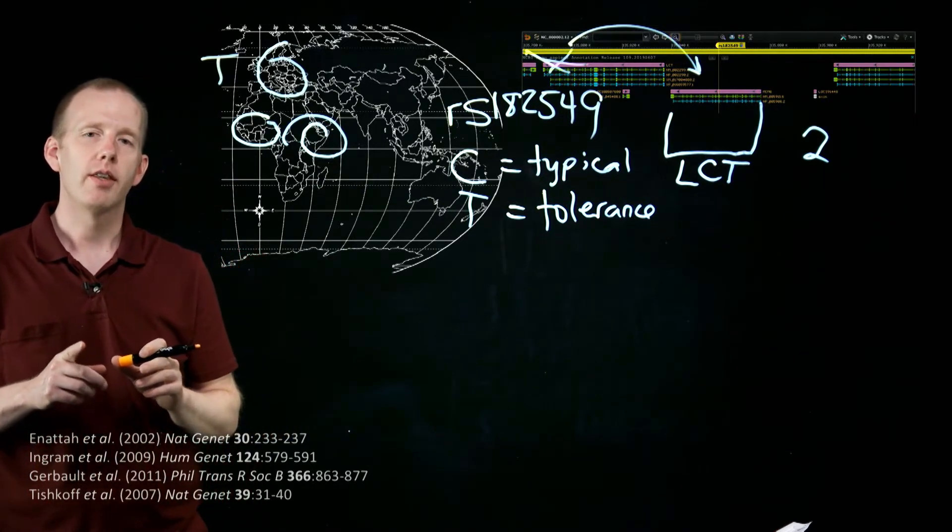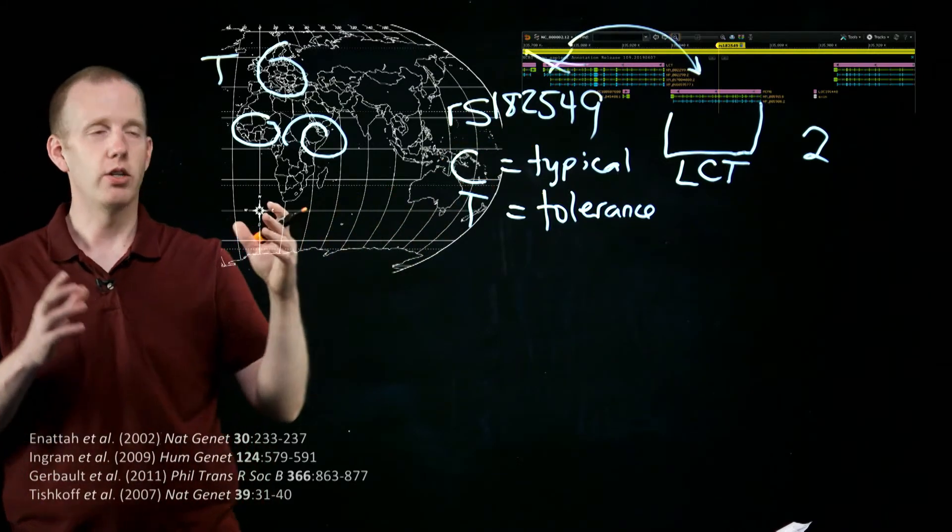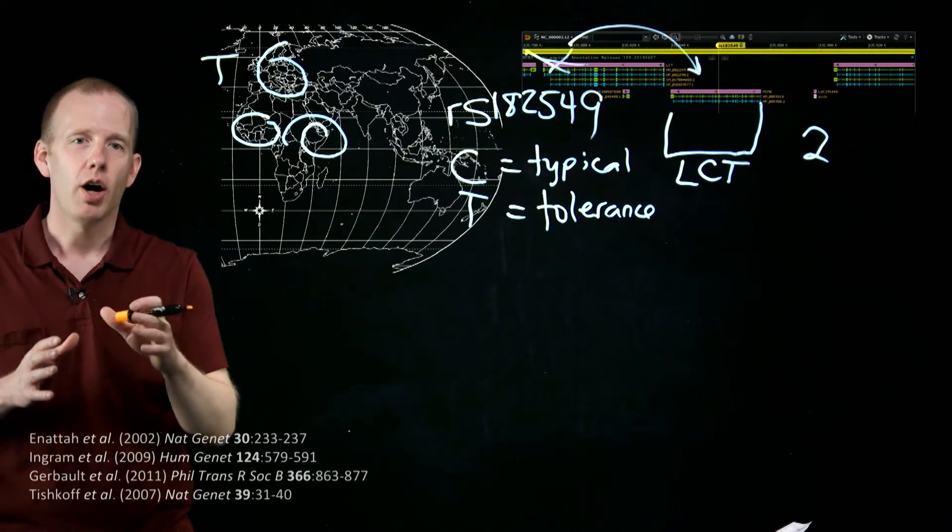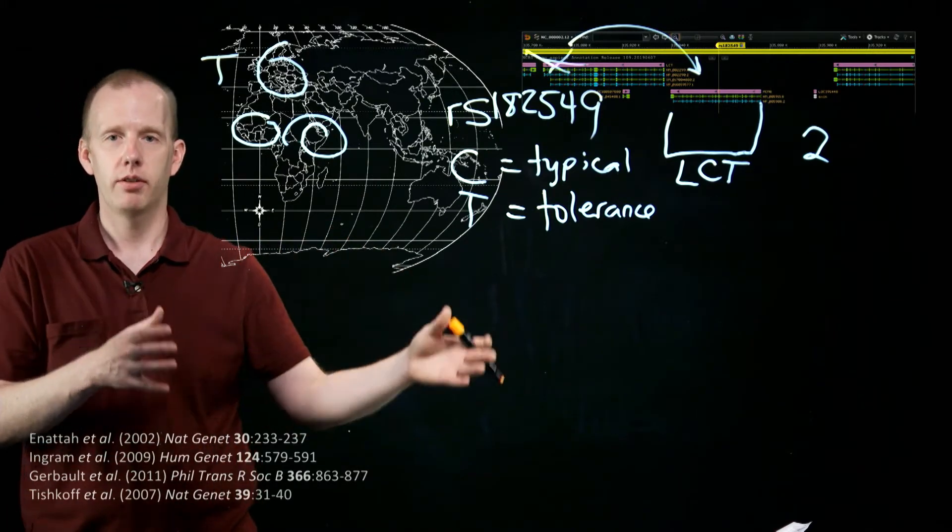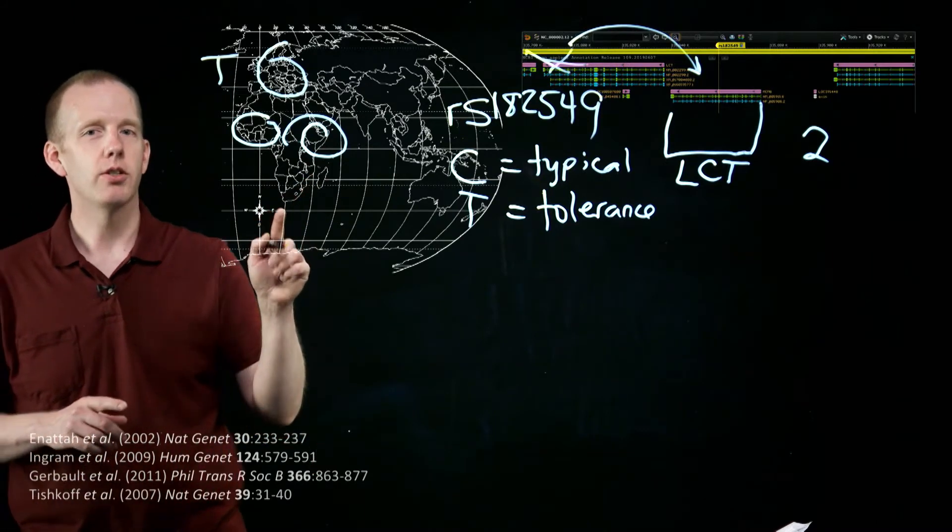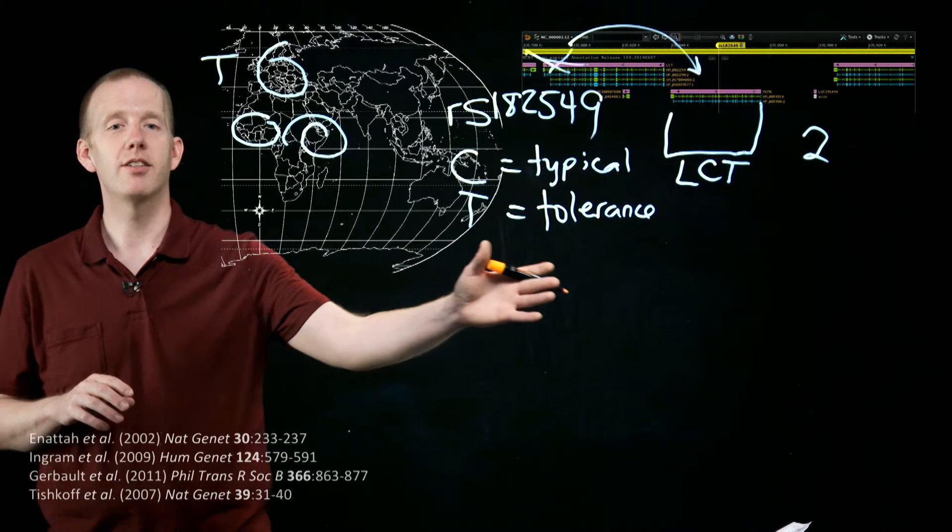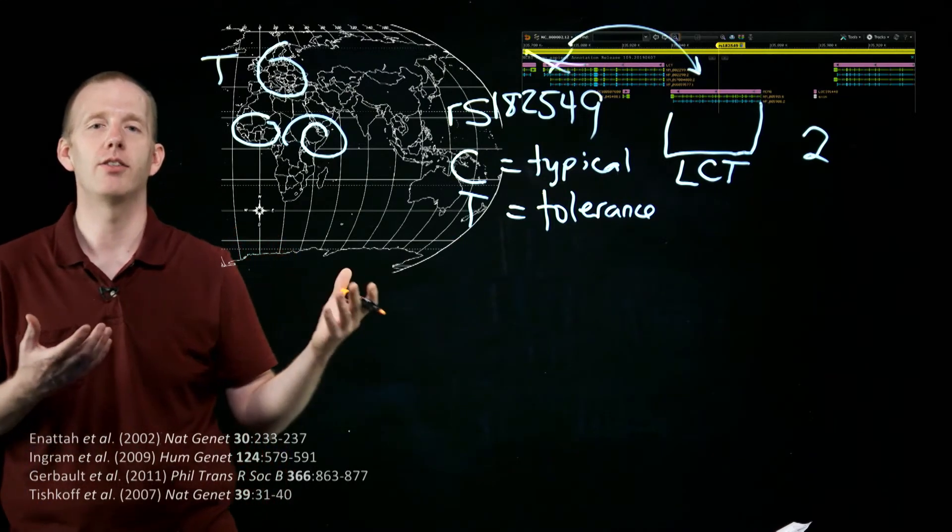which is that different mutations, like the T at RS182549, can cause lactase to be expressed, the protein produced, into adulthood. But that mutation is not the only mutation in all of our chromosomes that could lead to the same result, production of lactase in adulthood.